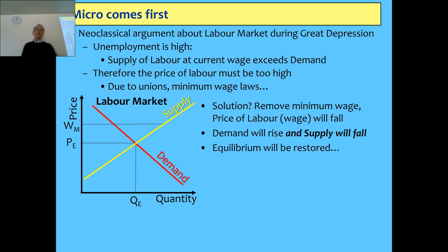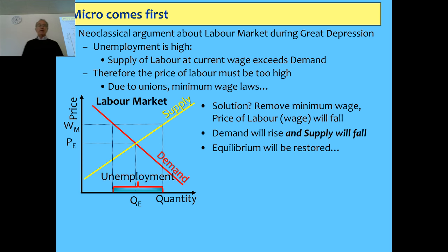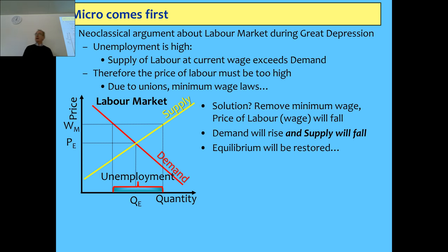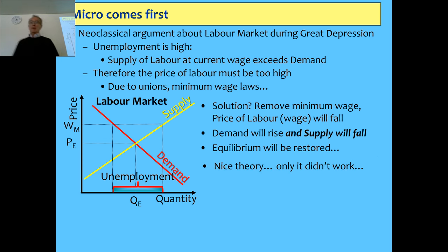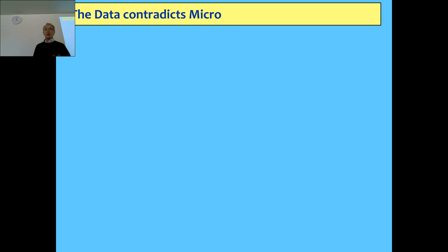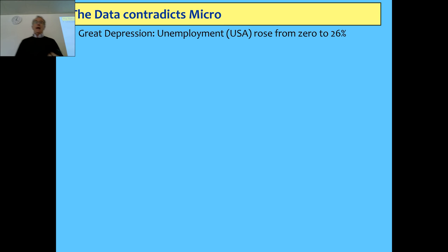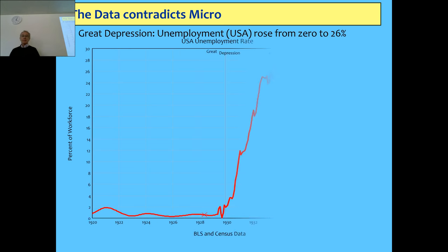Their logic was: the minimum wage is too high; unemployment is the gap between the supply of labour at that wage and the demand for labour at that wage, so if you cut the wage, you get back to equilibrium. It's a nice little theory — only it failed abjectly during the Great Depression. Looking at United States data, unemployment went from effectively 0% at the end of 1930 to 26% just two years later.